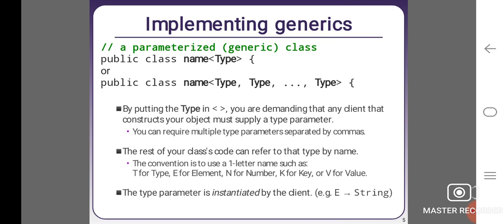The rest of your class code can refer to that type by name. The convention is to use a one-letter name such as: T for type, E for element, N for number, K for key, or V for value. The type parameter is initiated by the client. Example: E gives String.